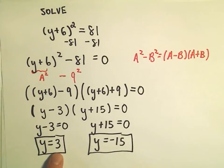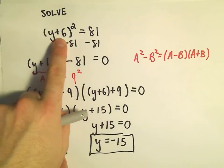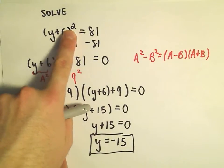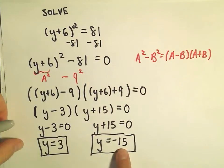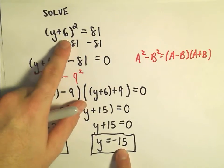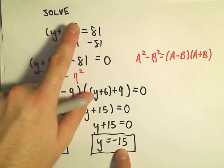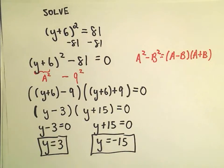And notice it's pretty easy to check these. If you plug 3 in, you would get 3 plus 6 or 9 squared, which is 81. If you plug negative 15 in, you would get negative 15 plus 6, which would give you negative 9. But that squared is still equal to 81.